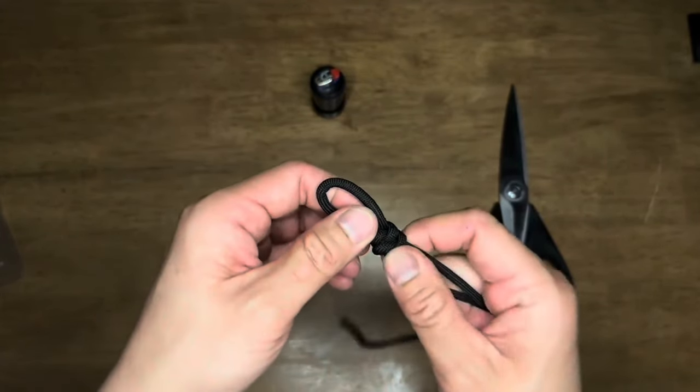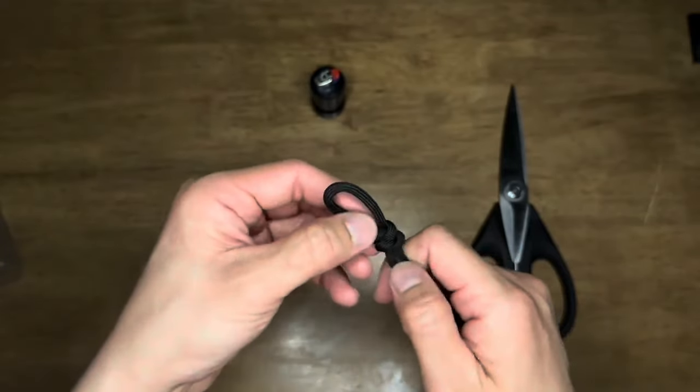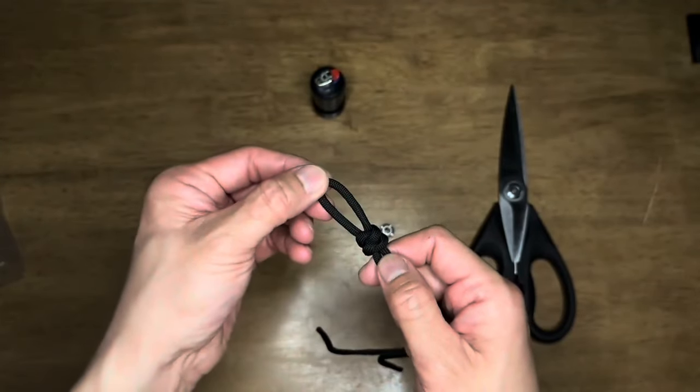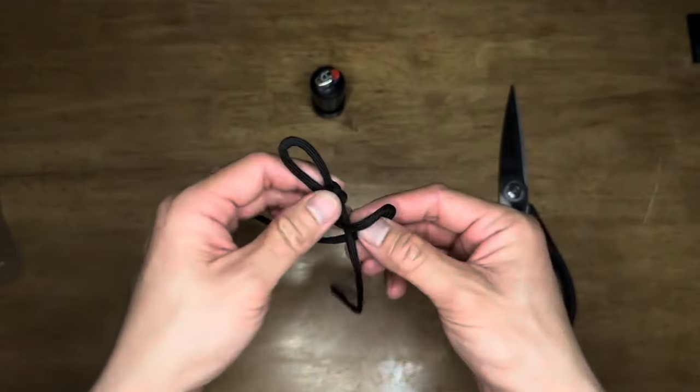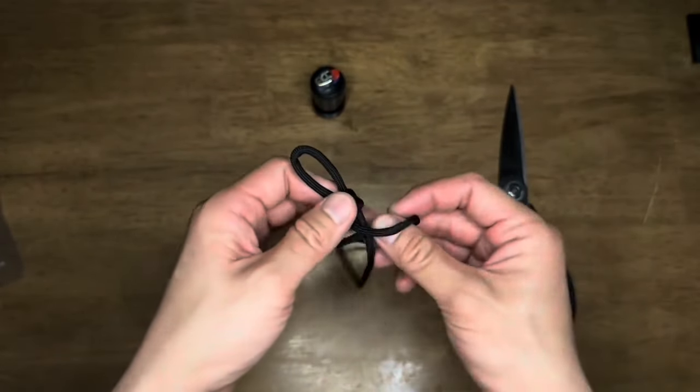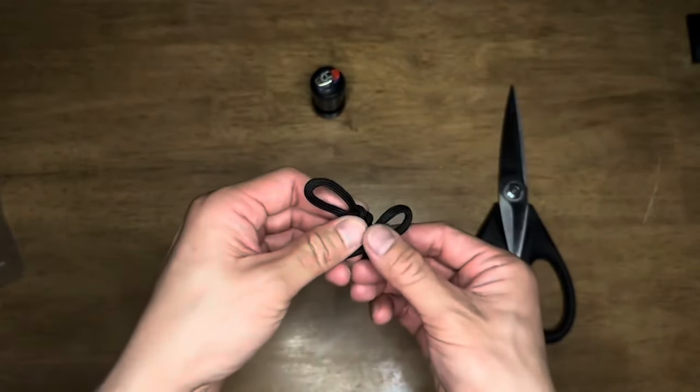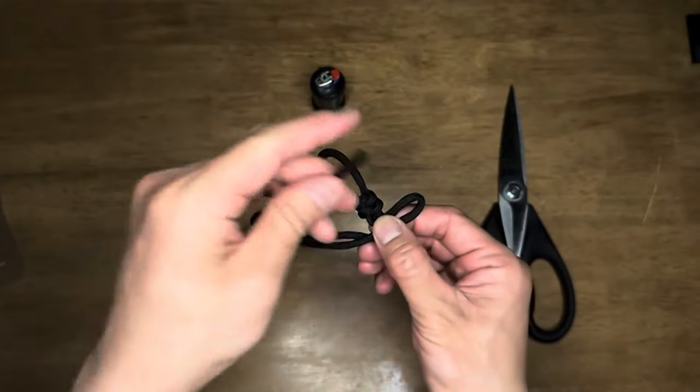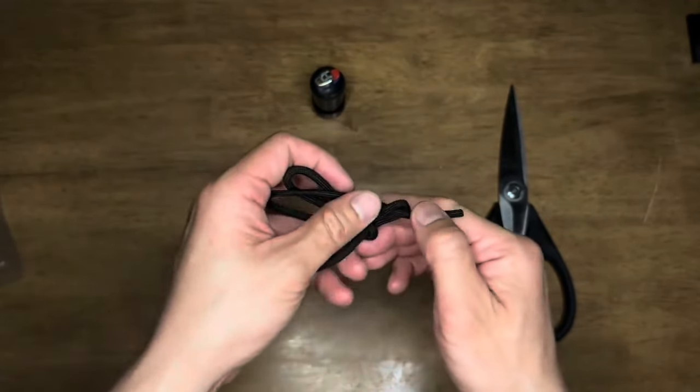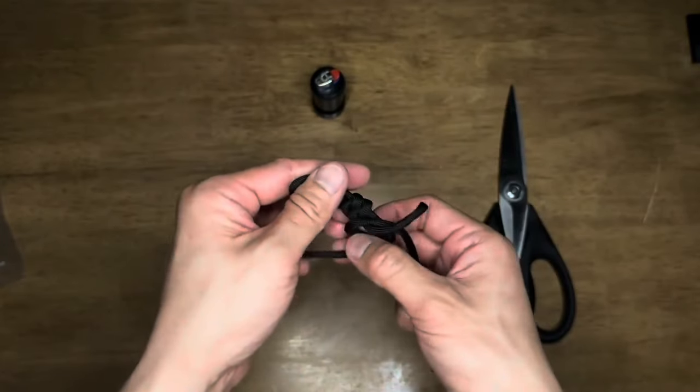Snug up the knots but don't tighten too tight. Remember, take the left side, go over then under the right side to make a side loop. Take the right side, go under the left side, over the top loop into that side loop you made with the left side of the paracord.